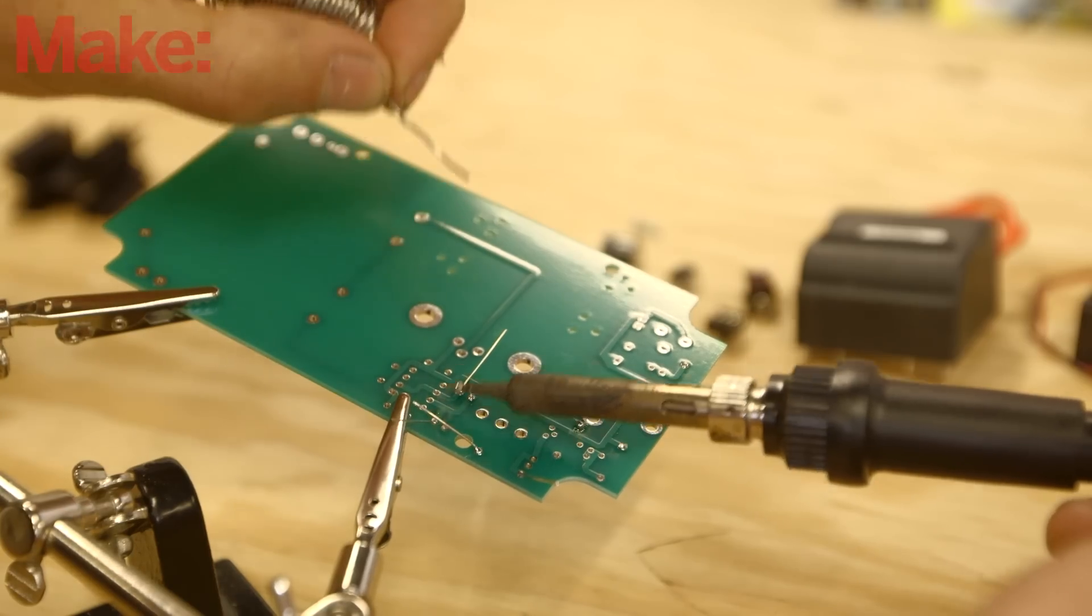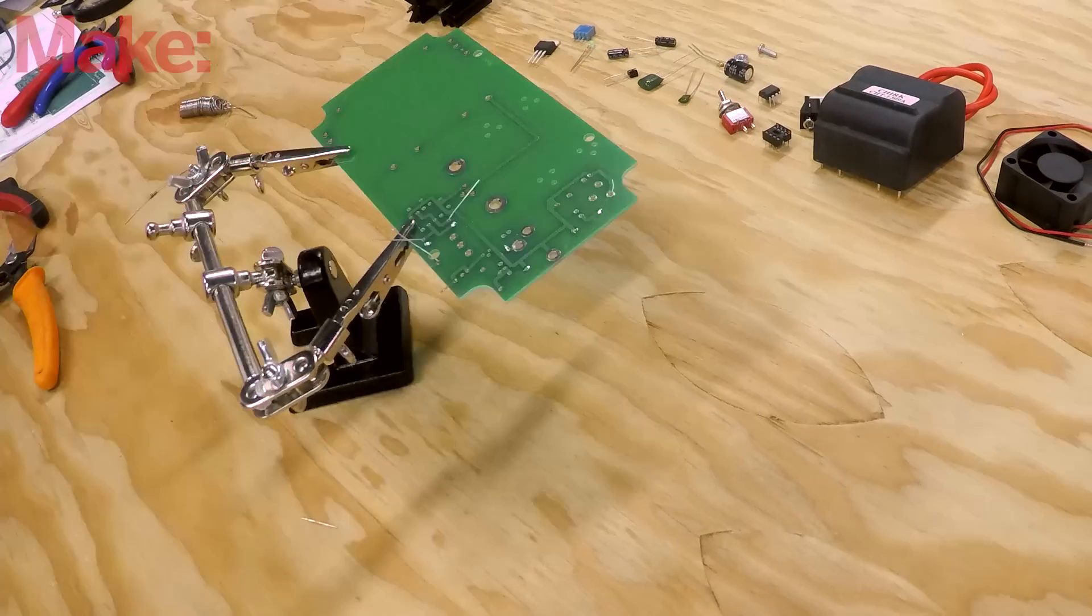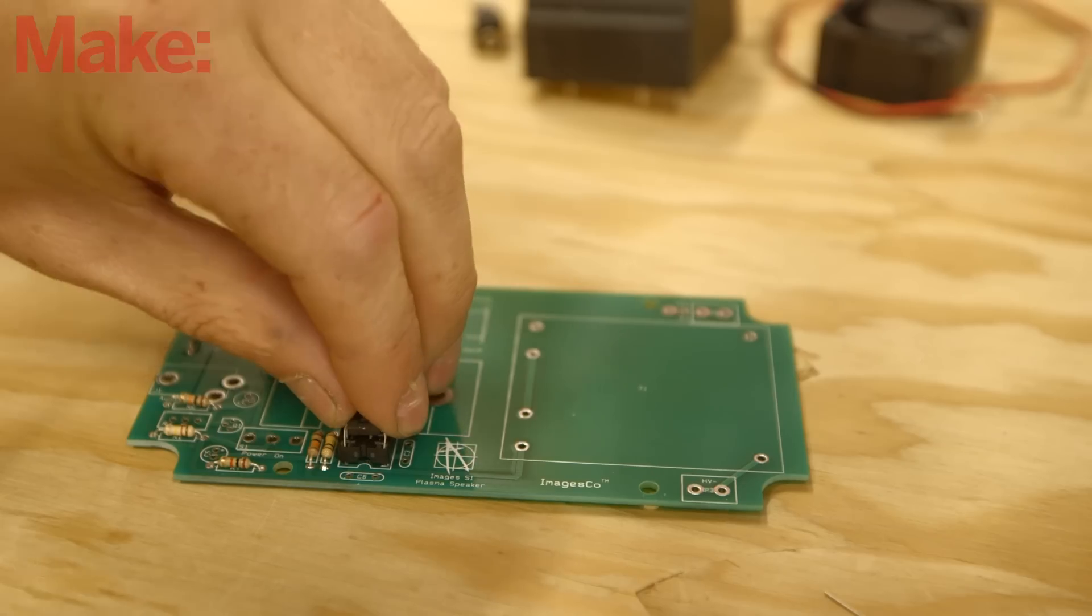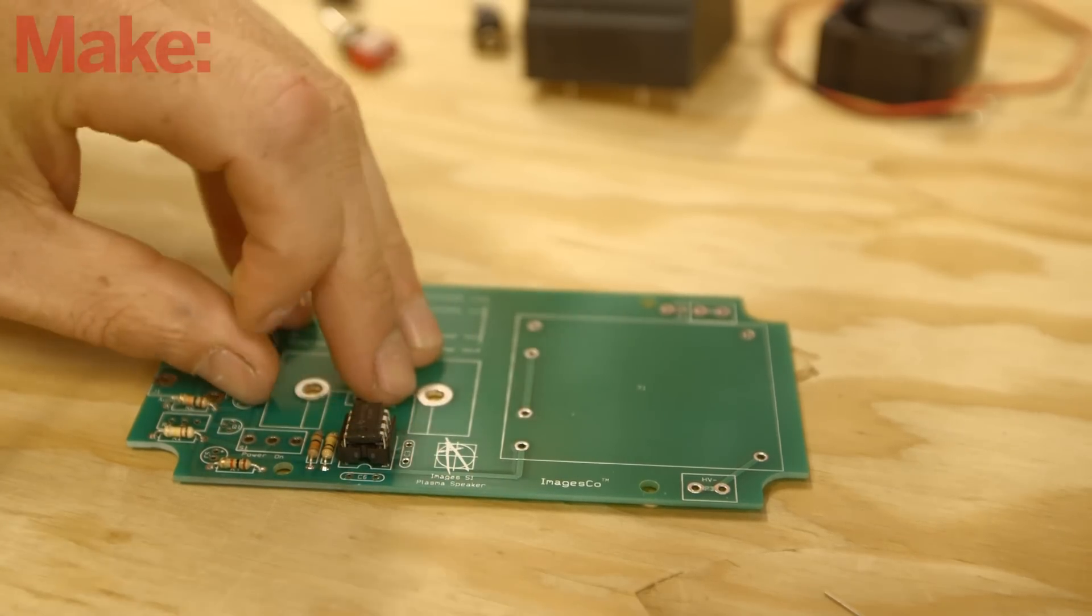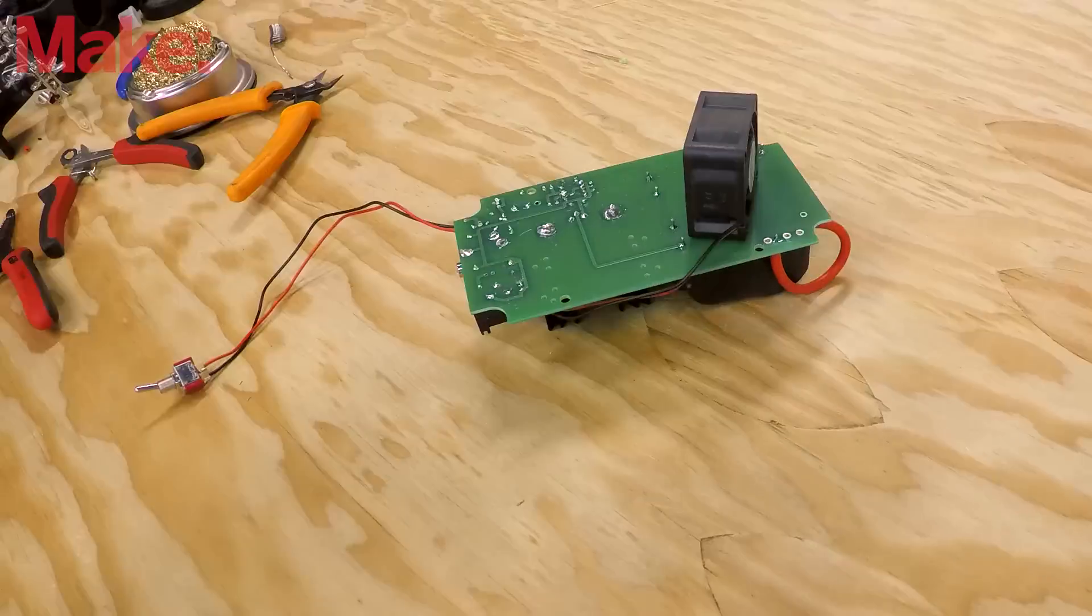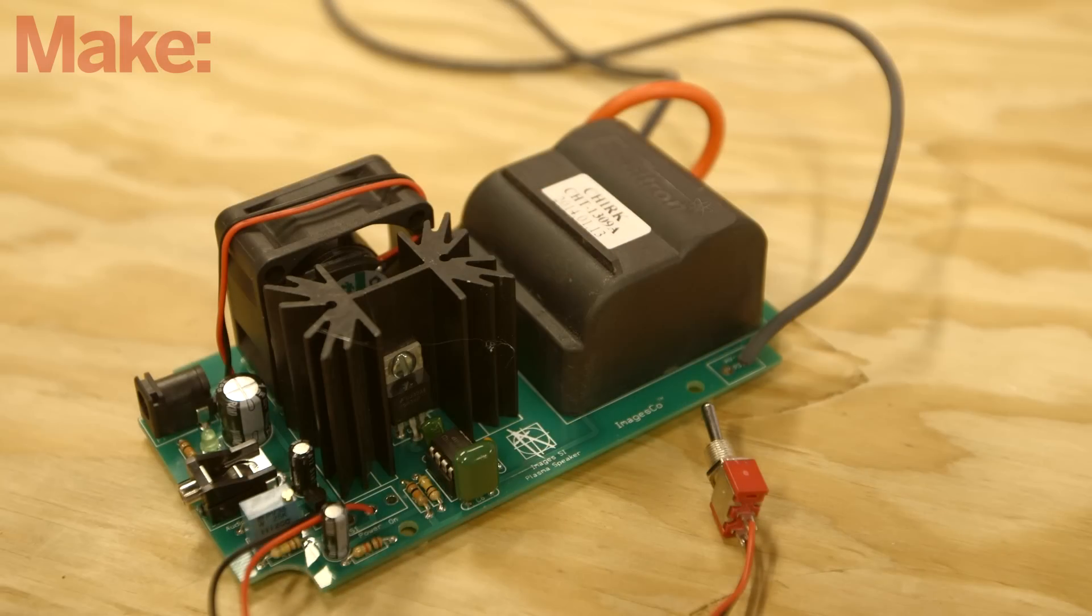To build this circuit, solder the components to the PCB supplied in the kit, or you can prototype the circuit with point-to-point wiring. A 555 timer chip creates a frequency modulated version of the audio input, which is amplified by the high voltage transformer, which drives the electric arc.